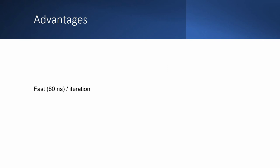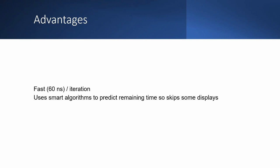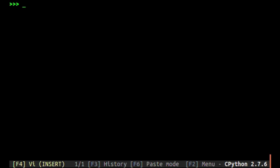It has many advantages — it's fast at 60 nanoseconds per iteration, which is over a hundred times faster than the 'progress' library. It does that because it has smart algorithms which predict how much time is remaining, so it doesn't always display it. It works on any platform, and it has no dependencies at all, because usually lots of libraries depend on lots of other libraries, but TQDM does not.